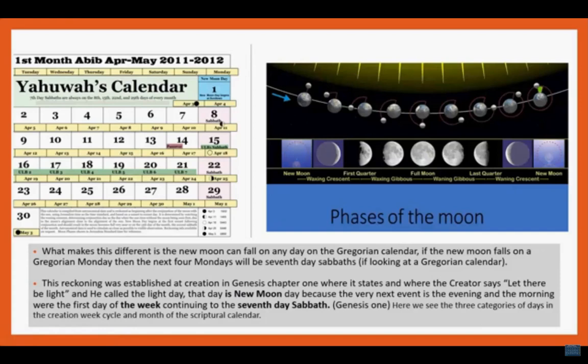This reckoning was established at creation — new moon day in Genesis chapter one — where the Creator says 'Let there be light,' and he calls the light day. That day is new moon day, because the very event is the evening and morning of the first day of the week, continuing to the seventh day, all laid out in Genesis one. So here we see the three categories of creation week: the new moon day, the work week, and the Sabbath.